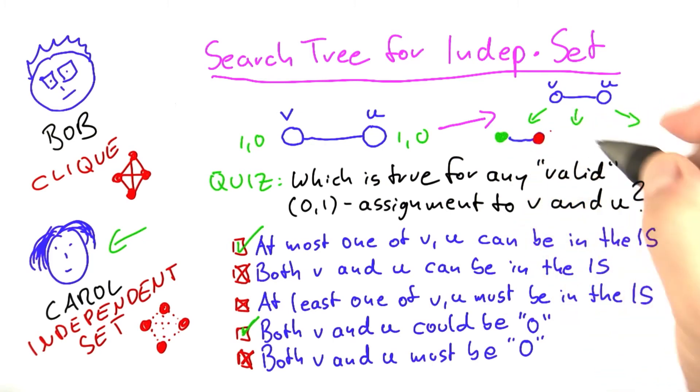The first one is we take v into the independent set but not u. The second one is exactly the other way around. We do not take v, but we take u. And finally, it is possible that both are excluded.